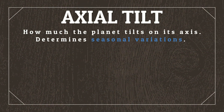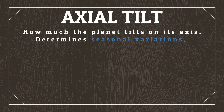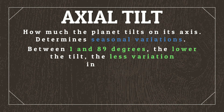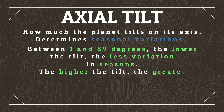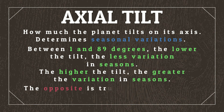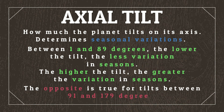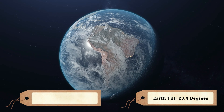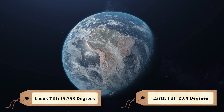We can also see that the year length is about 1.3 times the length of an Earth year, and while that isn't an extreme change, it does pose some challenges for seasonal life. To compensate, let's give the planet a lower axial tilt, to make the seasonal variations less extreme. Between 1 and 89 degrees, the lower the axial tilt, the less variation in seasons, and the higher the tilt, the greater the variation in seasons. The opposite is true for tilts between 91 and 179 degrees. For reference, Earth has an axial tilt of 23.4 degrees, so let's give Locusts an axial tilt of just under 15 degrees.